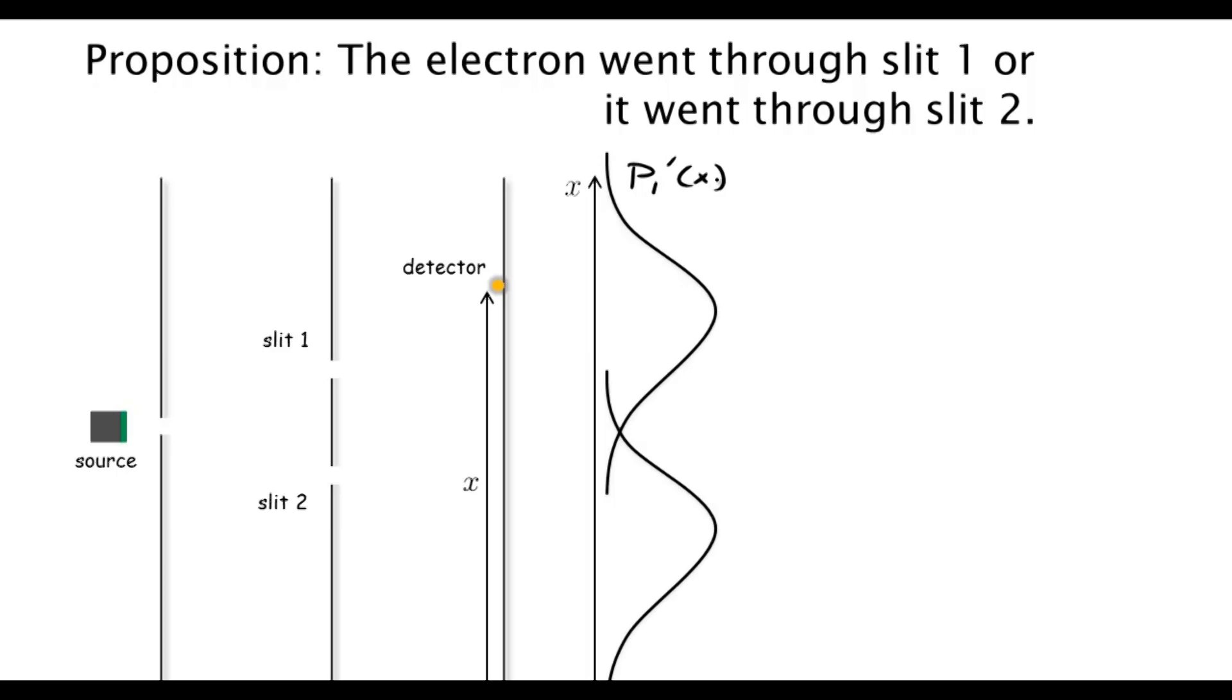Similarly, we have a curve p2' of X, which is when we detect an electron going through slit 2 and ending up at X. It turns out p1' looks very similar to p1 of X, and p2' looks very similar to p2 of X.